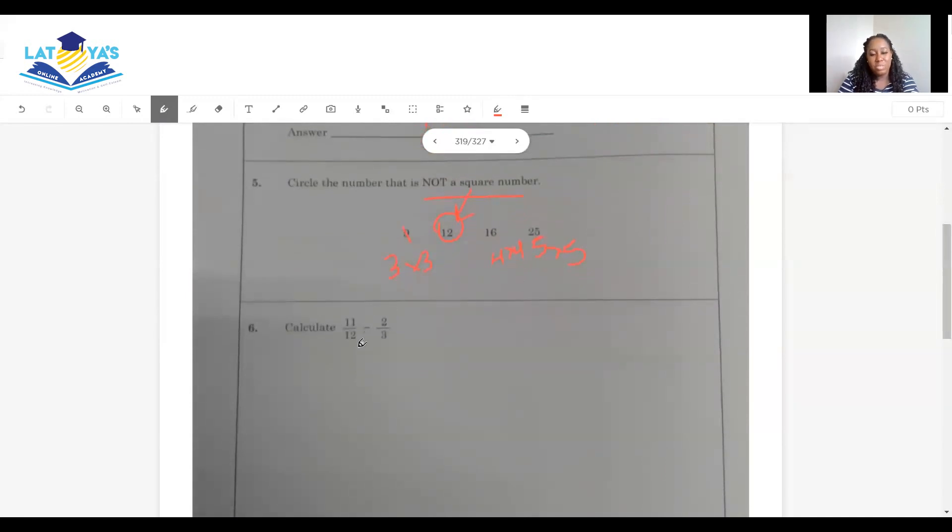Calculate 11/12 take away 2/3. What do we need to do? We have to remember when we are adding or subtracting fractions, we must have common denominators. We don't have common denominators. So we need to find the LCM. What is going to be the LCM of 3 and 12? For those of you who don't know it already, and for those of you who will be watching this video for next year, I'm going to explain.